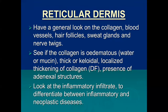In the reticular dermis, take a general look at the collagen, blood vessels, hair follicles, sweat glands, and nerve twigs, as all adnexal and connective tissue structures are part of the dermis. Collagen may be edematous, contain mucin, be thick, or keloidal. There can be localized thickening as in dermatofibroma, or adnexal structures and inflammatory infiltrate may be seen, requiring differentiation between inflammatory and neoplastic diseases.